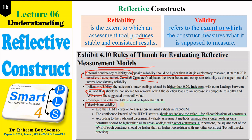Convergent validity can be checked with the help of AVE (Average Variance Extracted), and its value should be equal to or higher than 0.5. Discriminant validity can be checked with the help of the HTMT (Heterotrait-Monotrait) criterion in SmartPLS, as well as with the Fornell-Lacker criterion using the square root of the AVE. These are the two criteria for measuring discriminant validity.